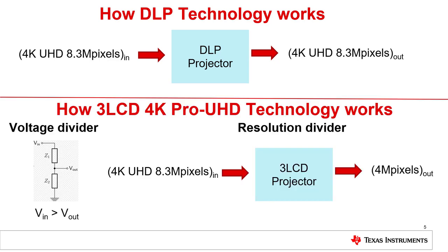For 3LCD technology, we compare this technology to a voltage divider. In a traditional voltage divider circuit, the circuit converts an input voltage into a lower output voltage. A 3LCD projector operates in a similar fashion — it converts a 4K UHD 8.3 million pixel input signal into a 4 million pixel output signal onto the screen. That means 3LCD's so-called 4K resolution is actually only half true 4K.